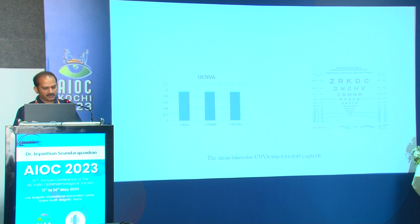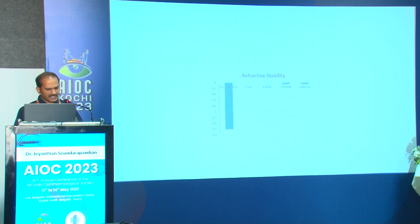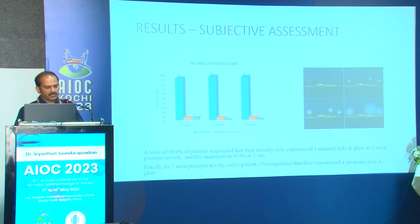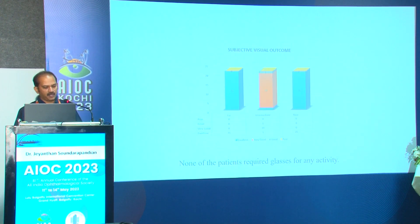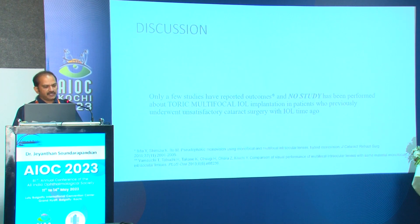The mean binocular uncorrected near visual acuity was 0.01 logMAR. Refractive stability was maintained throughout the postoperative period up to three months. A total of 90% of patients initially experienced only minimal halo and glare at one week postoperatively, increasing to 95% at one month. By three months, only one patient reported moderate halo and glare, and none required glasses for any activity.